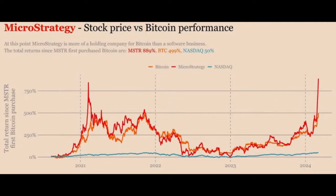Here's a chart showing MicroStrategy's stock price versus Bitcoin and NASDAQ performance since MicroStrategy bought its first Bitcoin on August 11, 2020. During that period, the NASDAQ returned 50%, Bitcoin returned 499%, and MicroStrategy returned 889%. As more Bitcoin is added to the balance sheet, this accelerated return will increase — the separation between Bitcoin's performance and MicroStrategy's performance will get larger and larger. This is extremely powerful if you have conviction that Bitcoin will perform well over the next 5, 10, or 20 years.